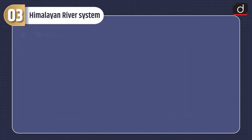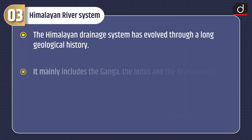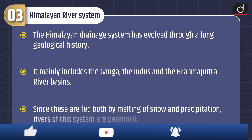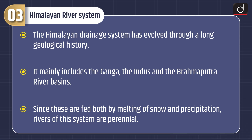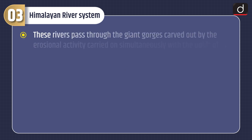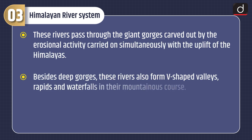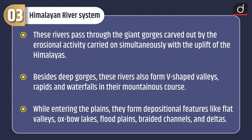The Himalayan drainage system has evolved through a long geological history. It mainly includes the Ganga, the Indus, and the Brahmaputra river basins. Since these are fed both by melting of snow and precipitation, rivers of this system are perennial. These rivers pass through giant gorges carved out by erosional activity carried on simultaneously with the uplift of the Himalayas.